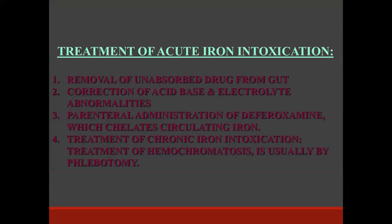Treatment of acute iron intoxication involves removal of unabsorbed drug from the gut, correction of acid-base and electrolyte abnormalities, and parenteral administration of desferrioxamine, which chelates circulating iron. Treatment of chronic iron intoxication and hemochromatosis is usually by phlebotomy — that is, incision of the veins.